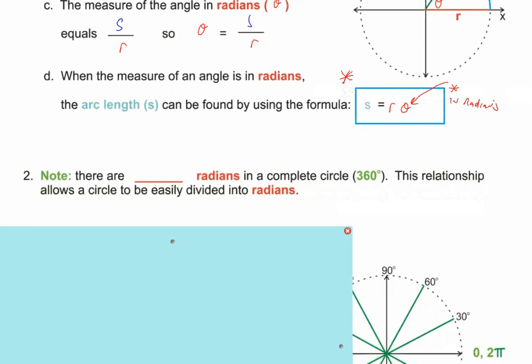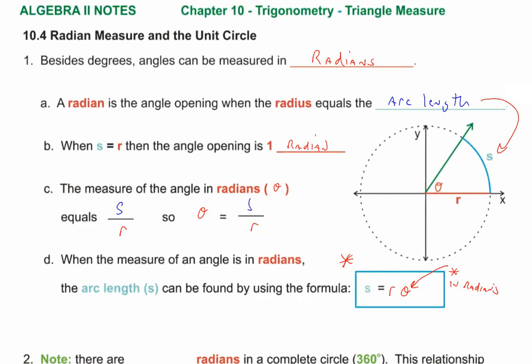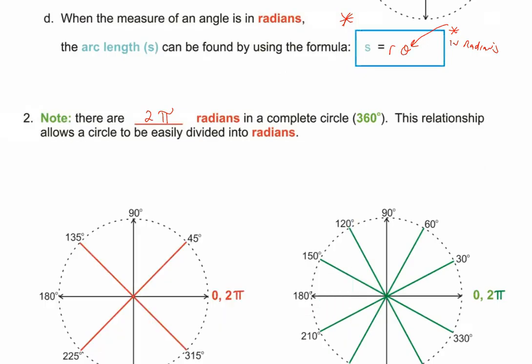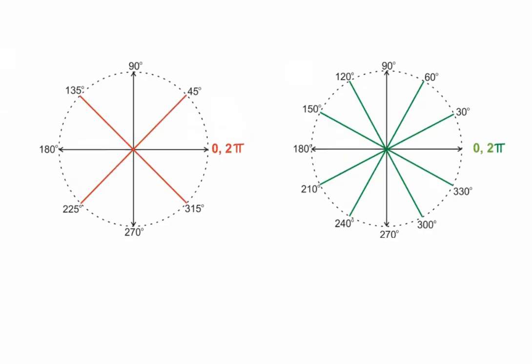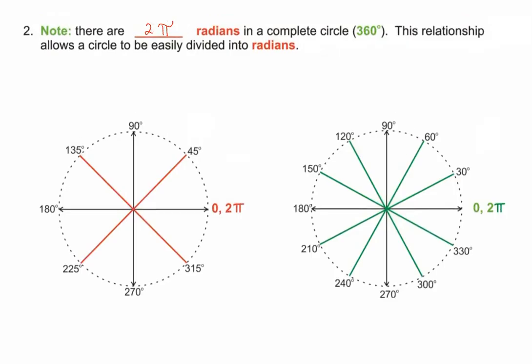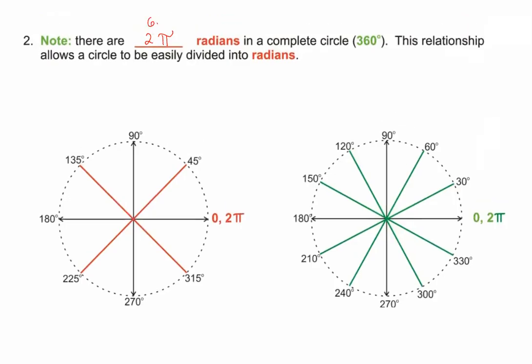Note number two — and this is the key to everything. There are two pi radians in a complete circle. Two pi? Take your calculator and multiply two times pi. You get 6.28. So there are 6.28 radians in a complete circle — it went from a nice round 360 to 6.28. We don't love the 6.28, but we love the two pi.